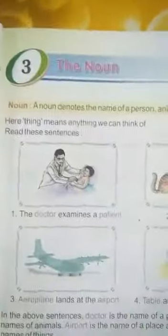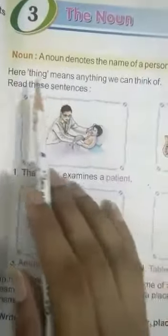So students, now it's time for our new chapter, the noun, okay? Let's go. What is a noun? You can tell us. A noun denotes the name of a person, animal, place, or thing. What does the noun? What denotes the name of a person? Name of a person, any man, animal, place, thing, or the whole class. Here, things. Here think, there, what do we mean? Anything we can think of. Think, what can we think of? Something we can think of.